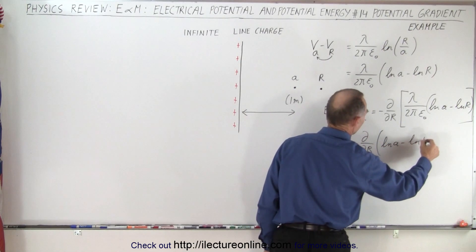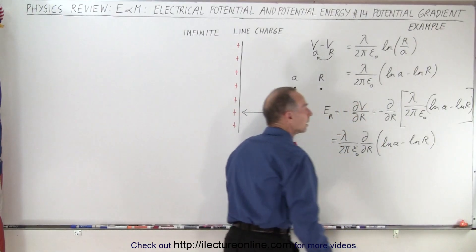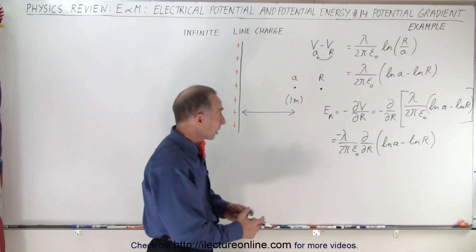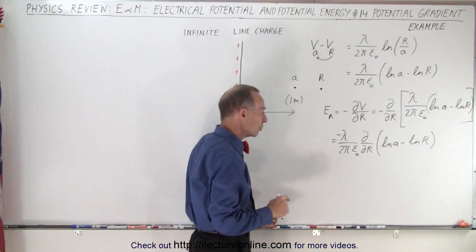But then again, A is a constant. We put it at 1 meter away, it's not going to move. So if we're going to take the partial derivative with respect to R of a constant, that goes to 0.